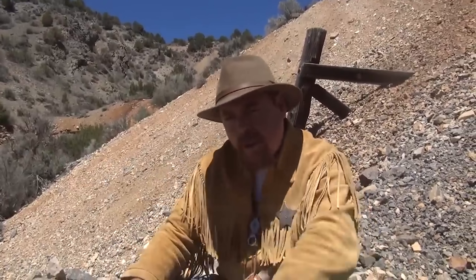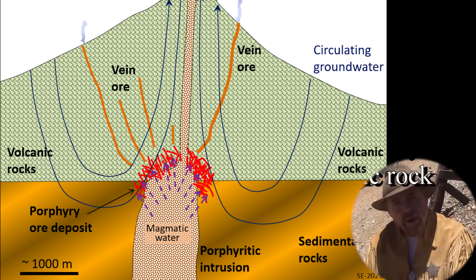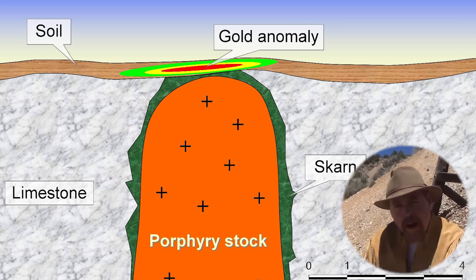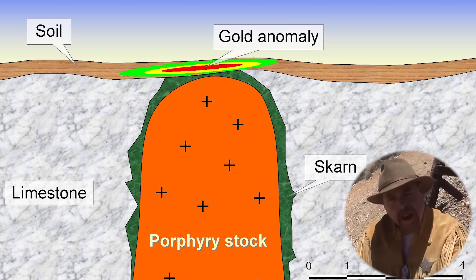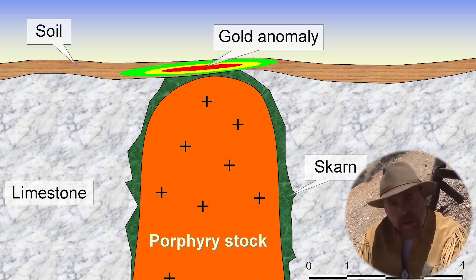Real quick backstory on the place we're at. It used to be called the Robinson District, founded in 1867 — they found gold here. What's interesting about this place is you have a huge porphyry intrusion here, and on the outskirts of that are gold deposits. There are 12 basic models of deposition for gold, and this is one of them — a porphyry or intrusion-related deposit.